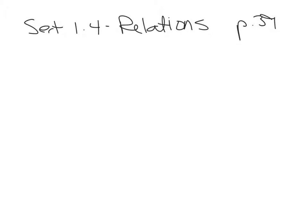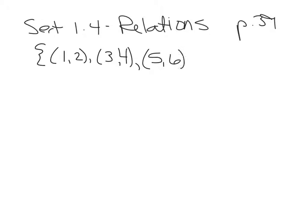Right on page 39, we have some examples of what relations look like as a set of ordered pairs. Just a set of ordered pairs can be a relation. The definition of what a relation is basically any set of data that belongs or is grouped together for some reason. It's just a set of data points or ordered pairs that belong together — that's what a relation is.